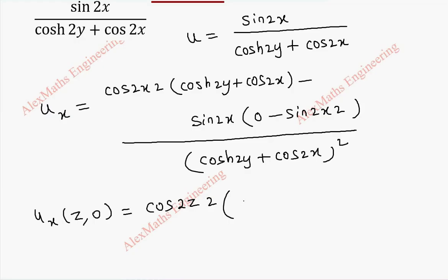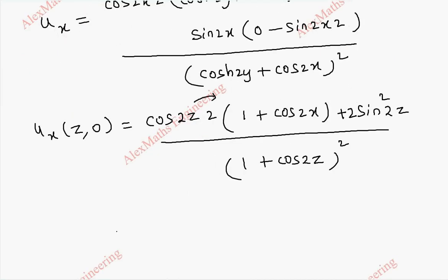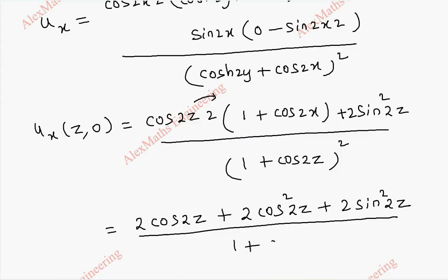When this is replaced as y with 0, cos 0 is 1 that is cosh 2y which is 1 plus cos 2x and this when I multiply we get plus sin square 2z and that is also a 2. And even in the denominator this becomes 1 and plus cos 2z whole square. Now finally when I multiply this inside, we get 2 cos 2z plus 2 cos square 2z plus 2 sin square 2z whole division 1 plus cos 2z whole square.